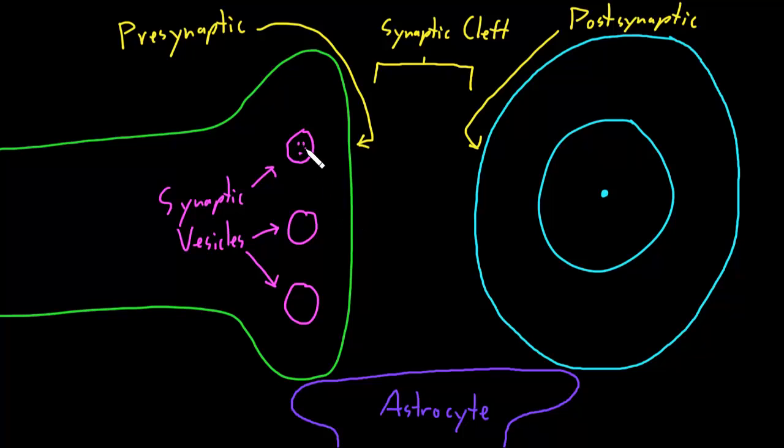I'll just draw a couple of dots in here to represent these molecules. And they're called collectively neurotransmitter because they transmit information from the neuron to the target cell. So all of these molecules are collectively called neurotransmitters. And there are different types of neurotransmitters that we'll get into in other videos.